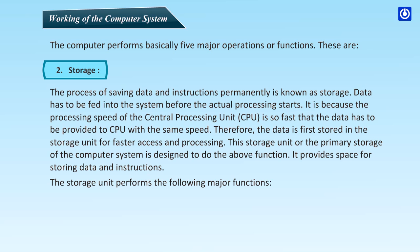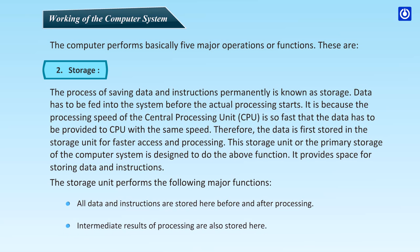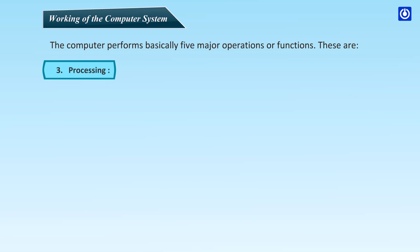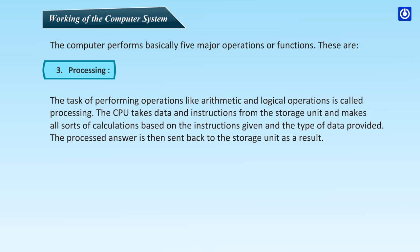The storage unit performs the following major functions: all data and instructions are stored here before and after processing, and intermediate results of processing are also stored here. Third, processing. The task of performing operations like arithmetic and logical operations is called processing. The CPU takes data and instructions from the storage unit and makes all sorts of calculations based on the instructions given and the type of data provided. The processed answer is then sent back to the storage unit as a result.